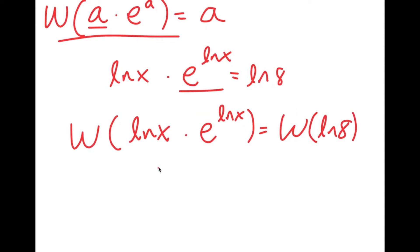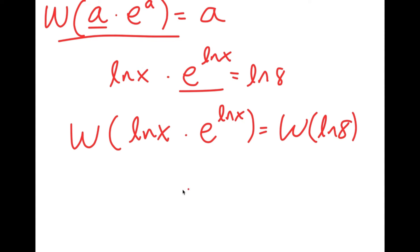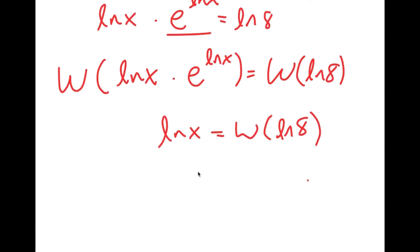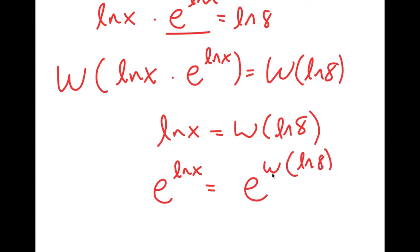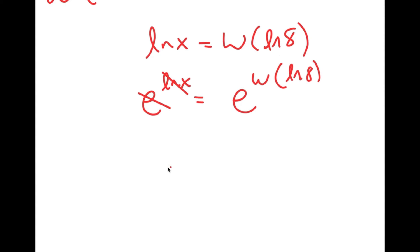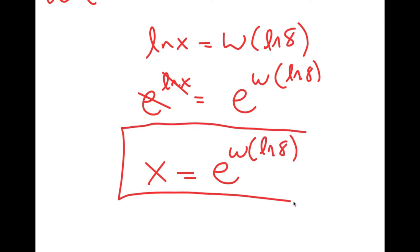Now I take e to the power of both sides, giving e to the power of ln(x) equals e to the power of W of ln(8). Since e and ln cancel out, I get x equals e to the power of W of ln(8). So this is my value of x.